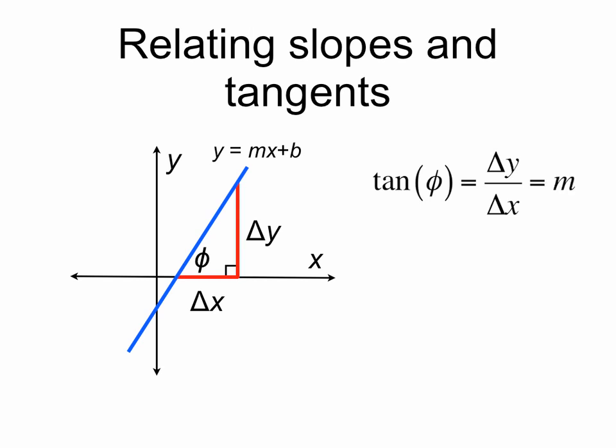And delta y over delta x is the slope of the line. So the tangent of phi is equal to m. And we can take the arctan of both sides to get phi equals the arctan of the slope m.